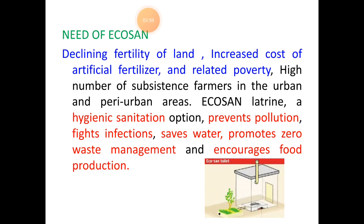What is the need for eco-san? Continuous usage of artificial or chemical fertilizers has led to a decline in land fertility and an increase in cost of chemicals, which further led to the poverty of farmers in both urban and peri-urban areas — that is, areas surrounded by the urban zone. Eco-san helps overcome all these problems.